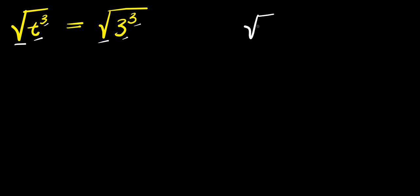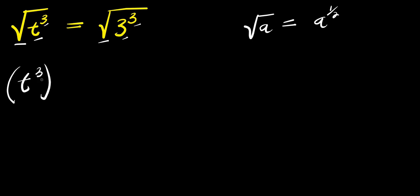If you have square root of a, this equals a raised to the power one over two. So the square root of t cubed is the same as t cubed raised to the power one over two, and this equals three cubed raised to the power one over two.